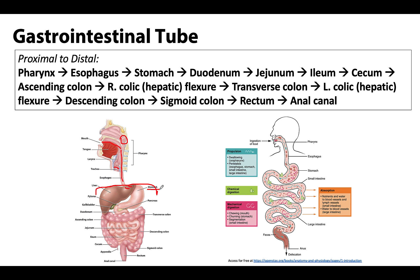The stomach may certainly be an issue when patients complain of GI upset, but when we're looking at a dissection it usually just presents as a mostly deflated structure. A lot of times in illustrations it always looks a lot bigger than it actually appears in real life. That stomach is typically going to be located mostly in the left upper quadrant of the abdomen region.